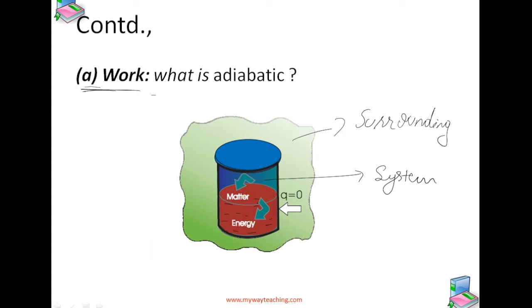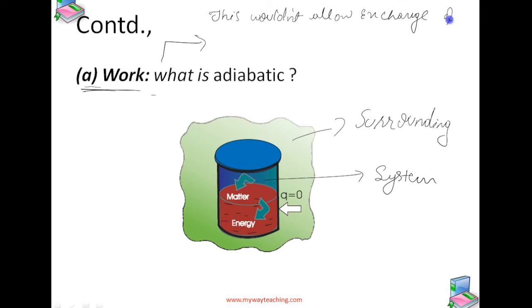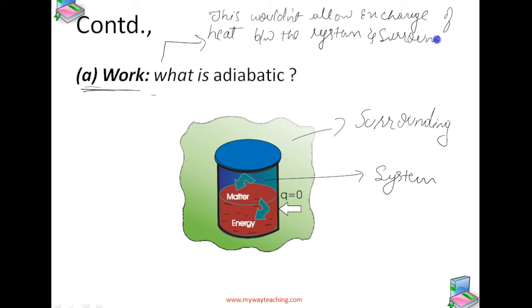This type of system, which does not allow exchange of heat between the system and surroundings through its wall, we call an adiabatic system.